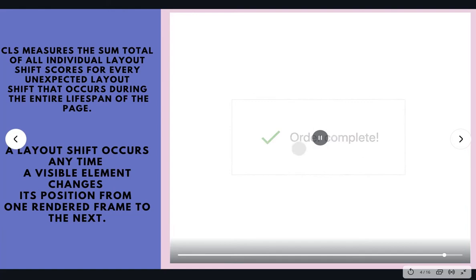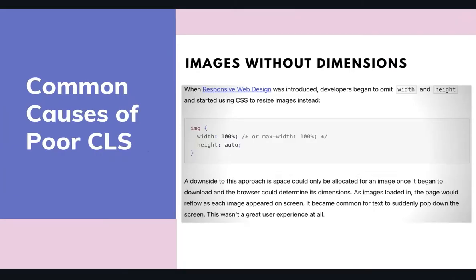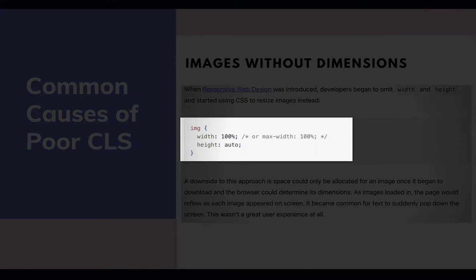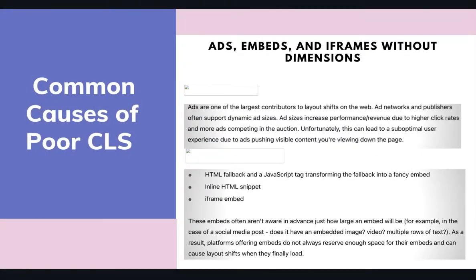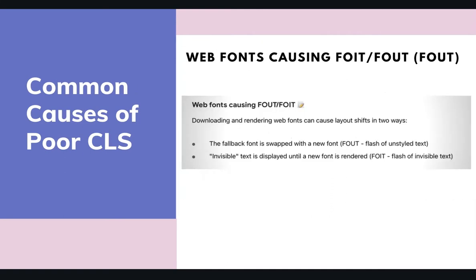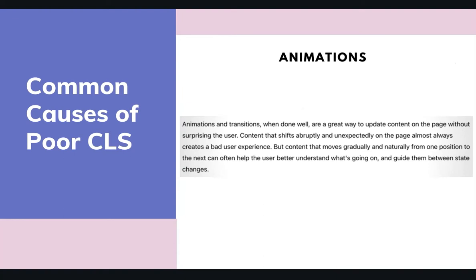What are the common factors that can cause poor CLS ratings? First are images without dimensions, and also ads, embeds and iframes without dimensions set. It can also be caused by dynamically injected content, along with web fonts causing flash of unstyled text and flash of invisible text, and also by animations.